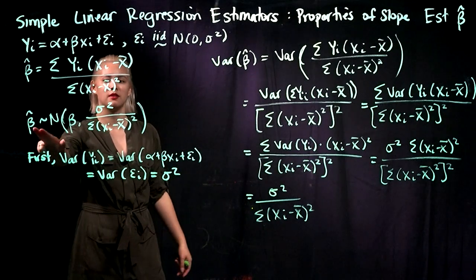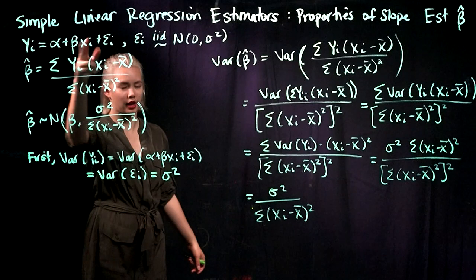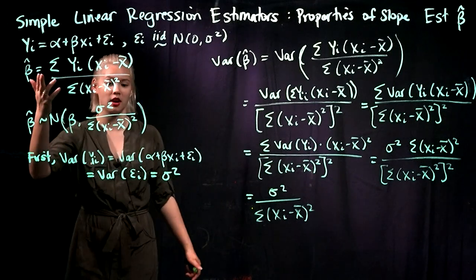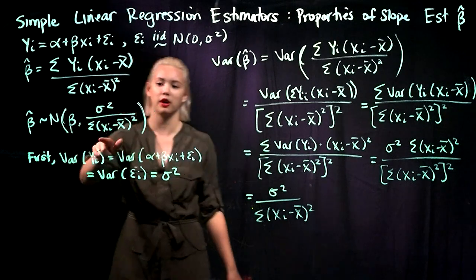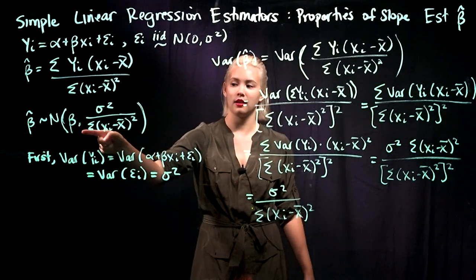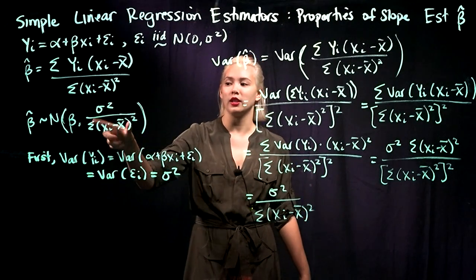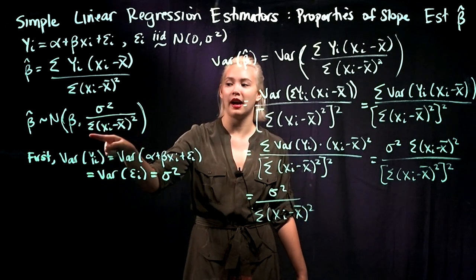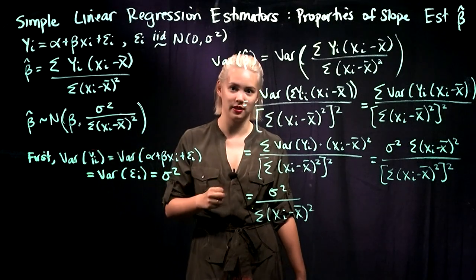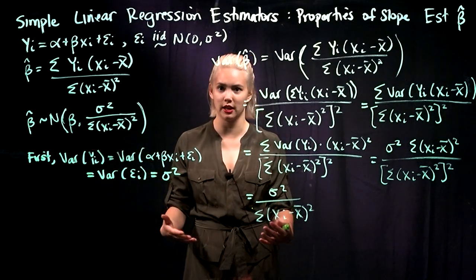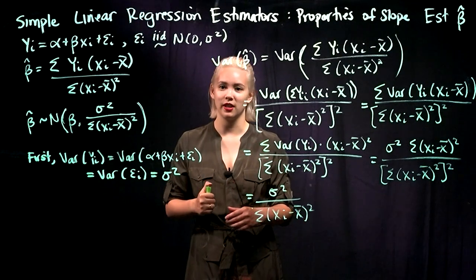In other words, the variance of beta hat depends on how variable the epsilons are — that's the sigma squared part. We divide by the sum of xi minus x bar squared, so as we get more data, we're dividing by a bigger and bigger amount, which drives the variance down. That intuitively makes sense: more data means we should be more sure about what beta hat is, so the variance of beta hat should decrease.